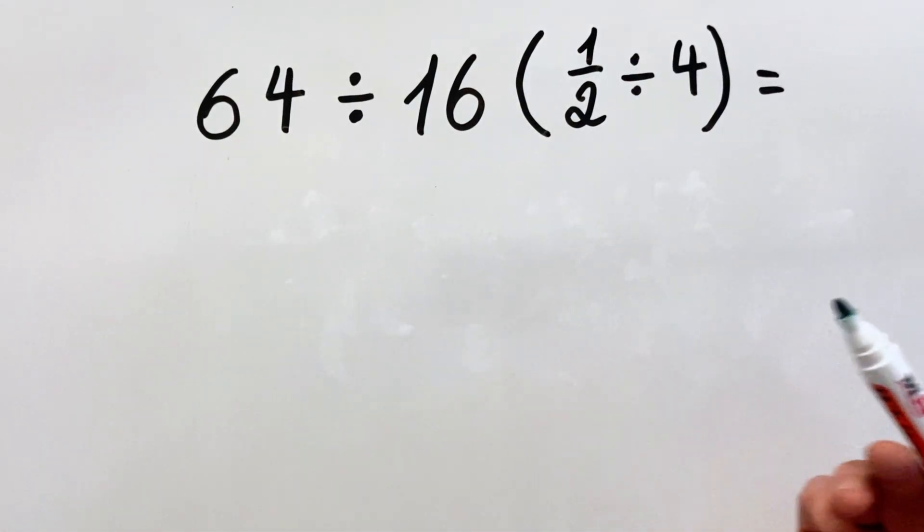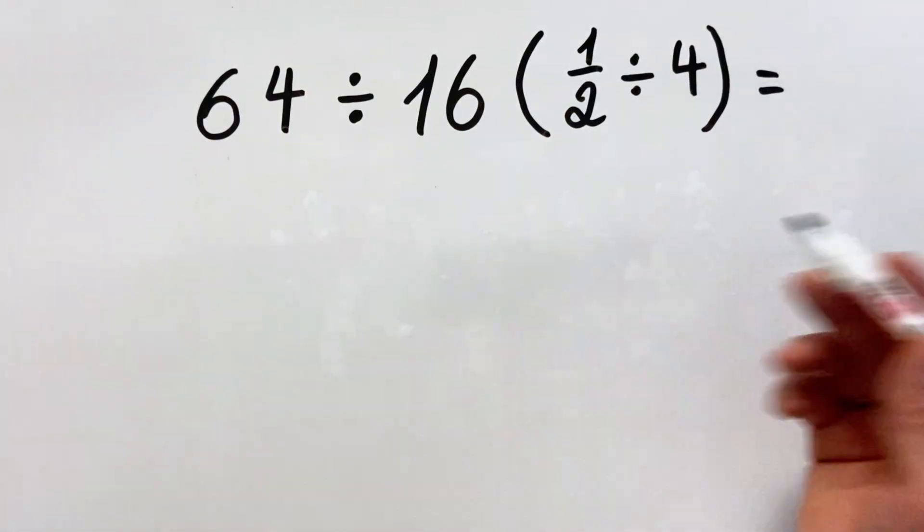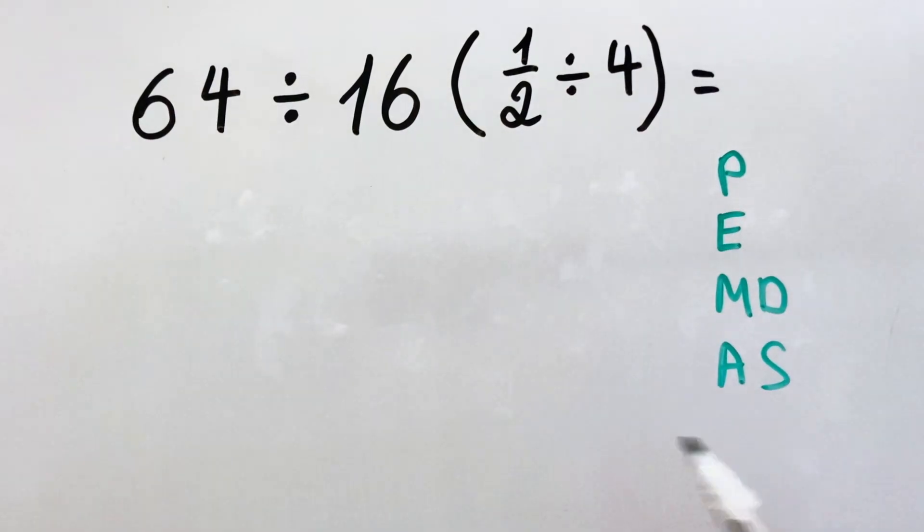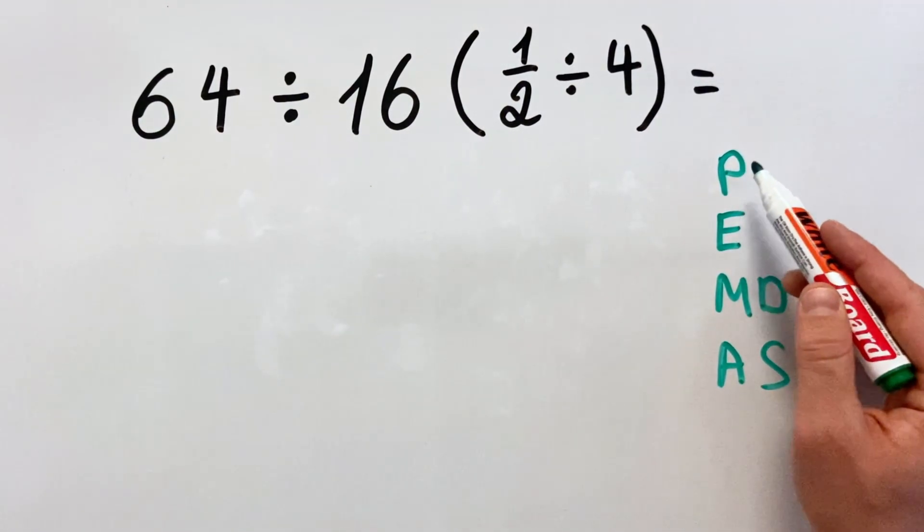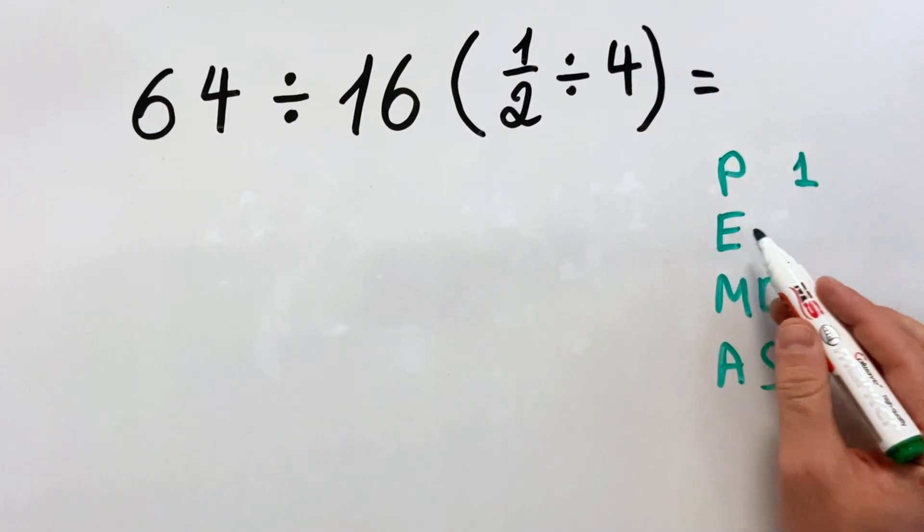Which is PEMDAS, or please excuse my dear Aunt Sally. What does it mean? It means that first we do what's inside the parentheses, then we do exponents. In this case we don't have it, but if we had, we would do it in the second place.